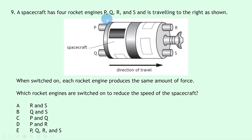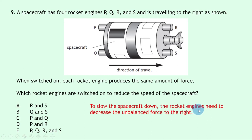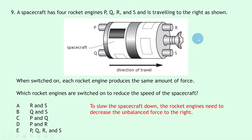Question 9 involves a spacecraft travelling to the right with four rocket engines P, Q, R, and S. To reduce the spacecraft's speed we need a force acting to the left. Engines R and S face leftward and when switched on propel exhaust to the right, producing a reaction force to the left. Switching on P and Q would increase the rightward force. So engines R and S are switched on, giving answer A.